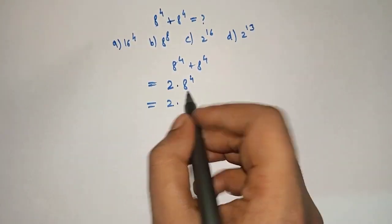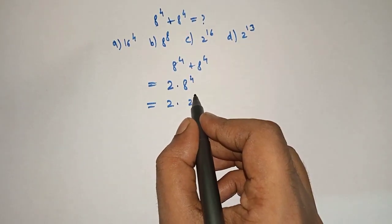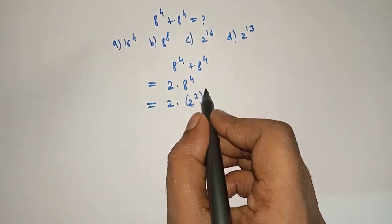Now, 2 into 8 can be written as 2 raised to 3, the whole raised to 4.